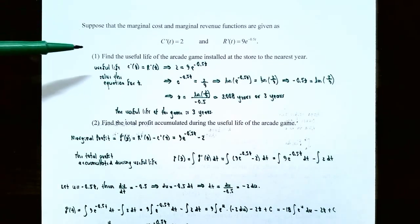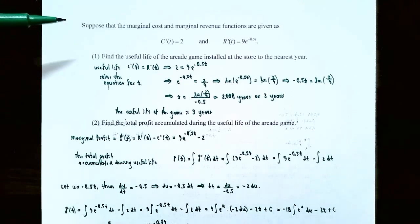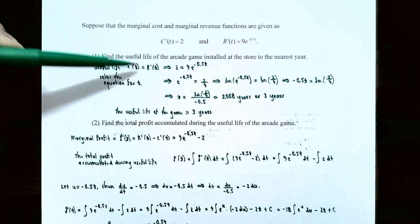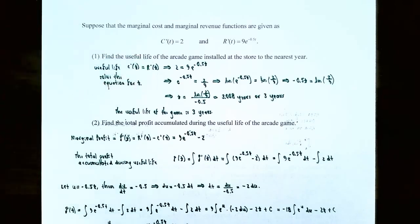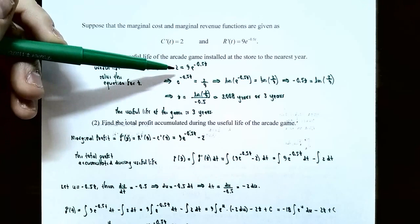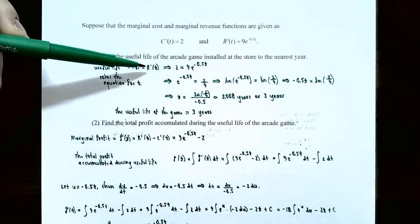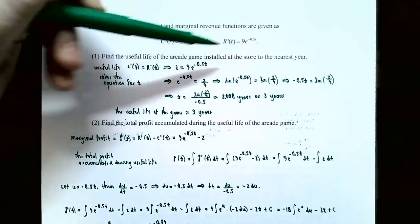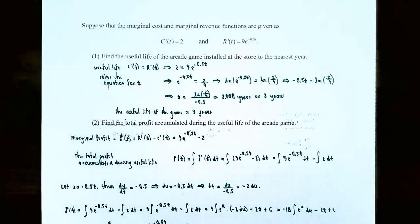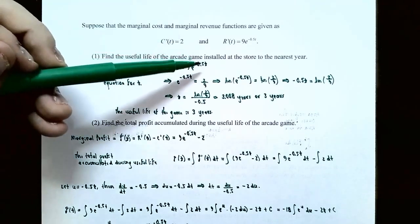Part one: find the useful life of the arcade game to the nearest year. We set the marginal cost equal to the marginal revenue: two equals nine times e to the negative 0.5 times t. To solve this exponential equation, first divide both sides by nine to isolate the exponential part, giving e to the negative 0.5t equals two-ninths. Then take the natural log of both sides — natural log and e are inverses, so you get negative 0.5t equals the natural log of two-ninths.